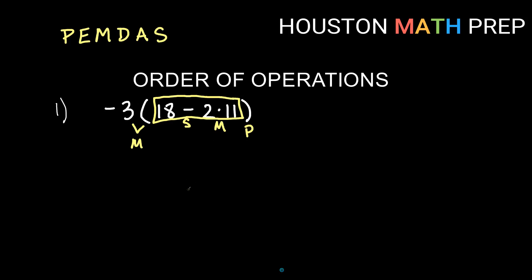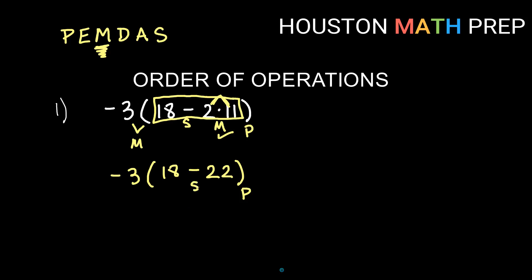Looking at 18 minus two times 11 inside the parentheses, I see a subtract and a multiply. The multiply comes first in PEMDAS, so I do two times 11 first, which gives 22. So we now have 18 minus 22 inside the parentheses. We've taken care of the multiply inside the parentheses, but we still have a subtract to do. Doing 18 minus 22 gives us negative four.